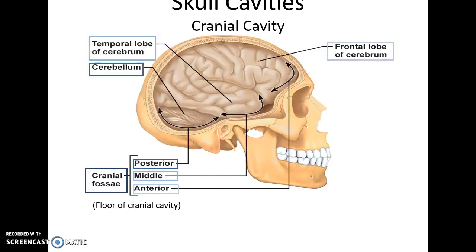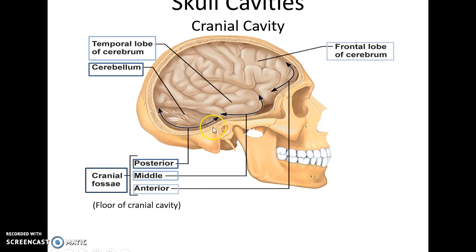If you look at the cranial cavity, you see that it has three different levels of floor. You have the higher anterior cranial fossa where the frontal lobe of the cerebrum rests, the middle cranial fossa where the temporal lobe of the cerebrum rests, and the posterior cranial fossa where the cerebellum of the brain rests.